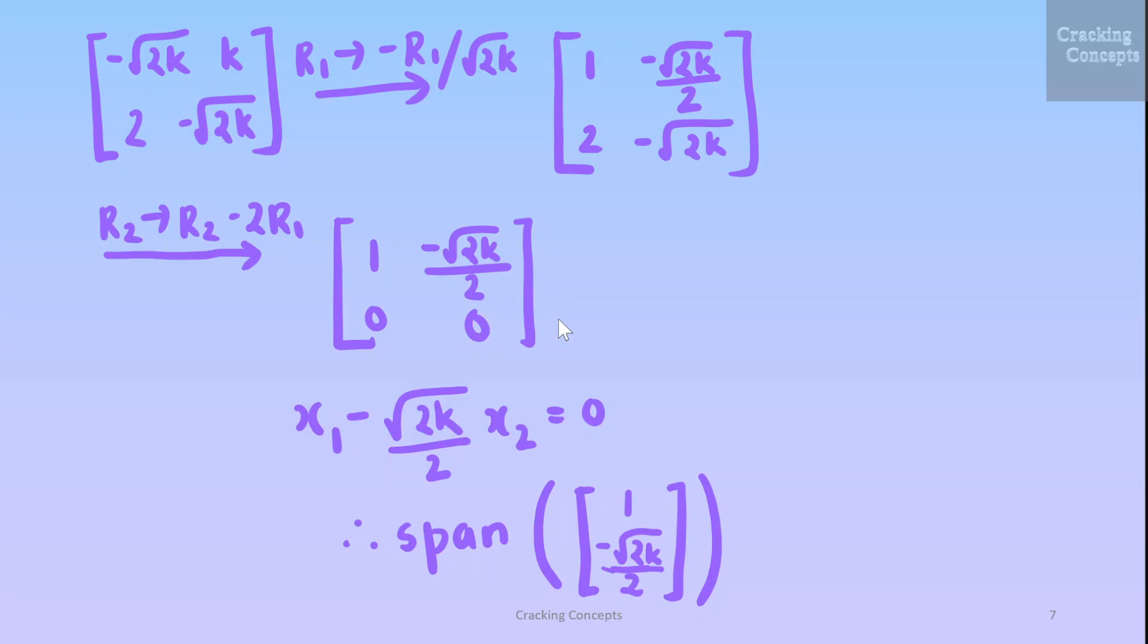So we can see that when we take the combination x1 minus root 2K by 2 x2 we'll get 0. From this we'll take the span as 1 which is the coefficient of x1 and minus root 2K by 2 which is the coefficient of x2. So this will be the eigenvector.